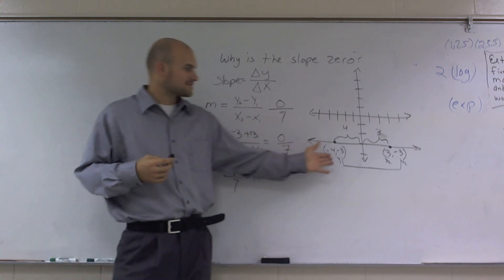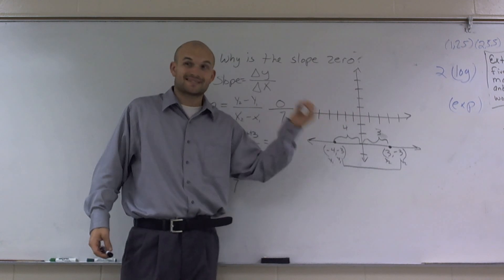And that's it. So whenever you guys see the slope or you see two points, and the two y points are exactly the same, you know you're going to have a slope of 0.